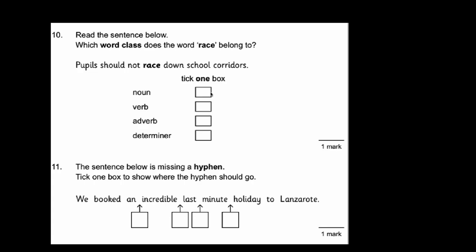Number 10. Read the sentence below. Which word class does the word 'race' belong to? Pupils should not race down the school corridors. Now 'race' could be a number of these options if it was just by itself. Race can be a noun. Race can be a verb for example. But we need to look at the sentence. Now if you were to replace 'race' with another verb, for example, let's say 'run'. Pupils should not run down the school corridors. That makes perfect sense. If you were to replace it with another noun, something similar like a marathon. Pupils should not marathon down the school corridors. Doesn't make any sense at all. In this case it is a verb. They're doing something. It's an action word. Don't race down the school corridors.